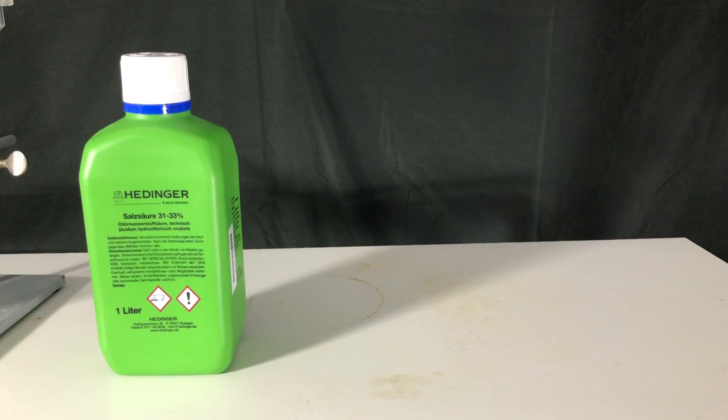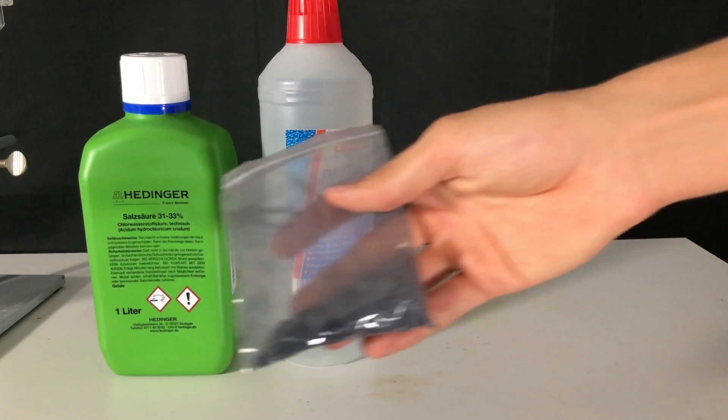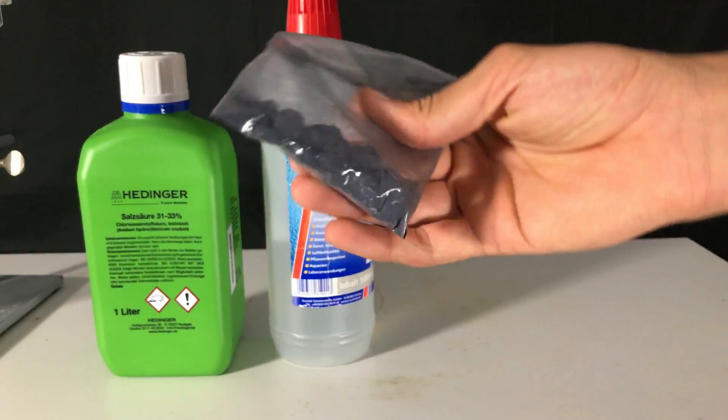Welcome back everyone, today we are going to prepare some silane gas. For this you will need hydrochloric acid, distilled water and some magnesium silicide.